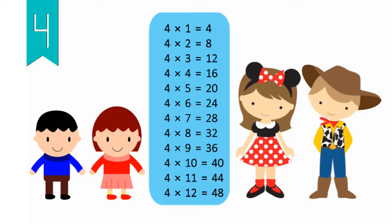4 x 1 equals 4, 4 x 2 equals 8, 4 x 3 equals 12, 4 x 4 equals 16, 4 x 5 equals 20, 4 x 6 equals 24, 4 x 7 equals 28, 4 x 8 equals 32, 4 x 9 equals 36, 4 x 10 equals 40, 4 x 11 equals 44, 4 x 12 equals 48.